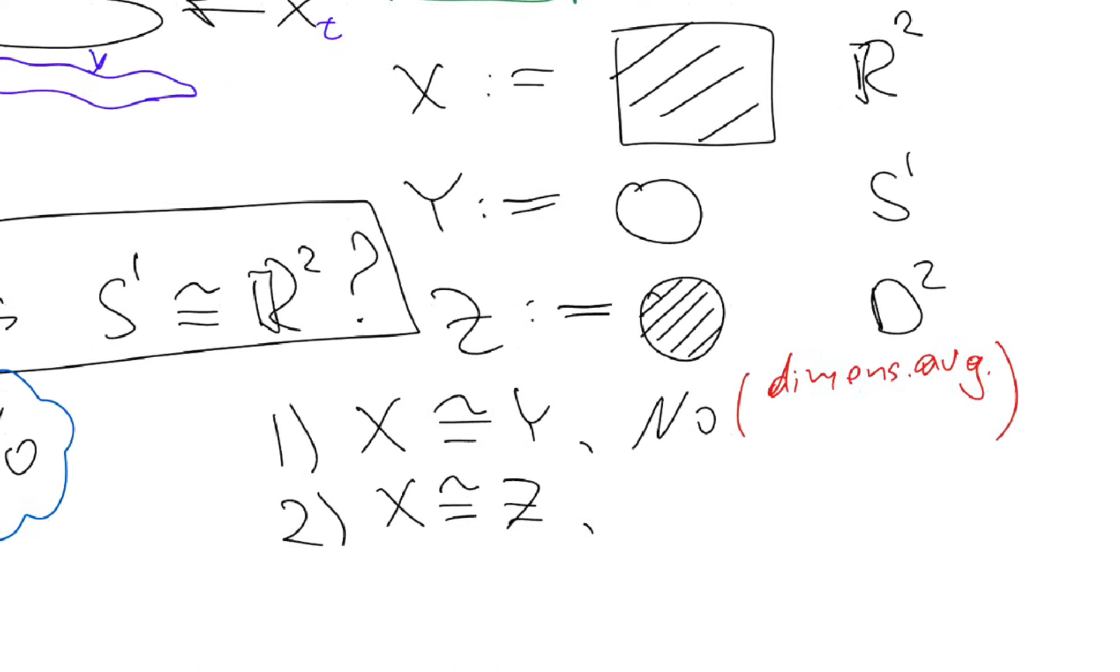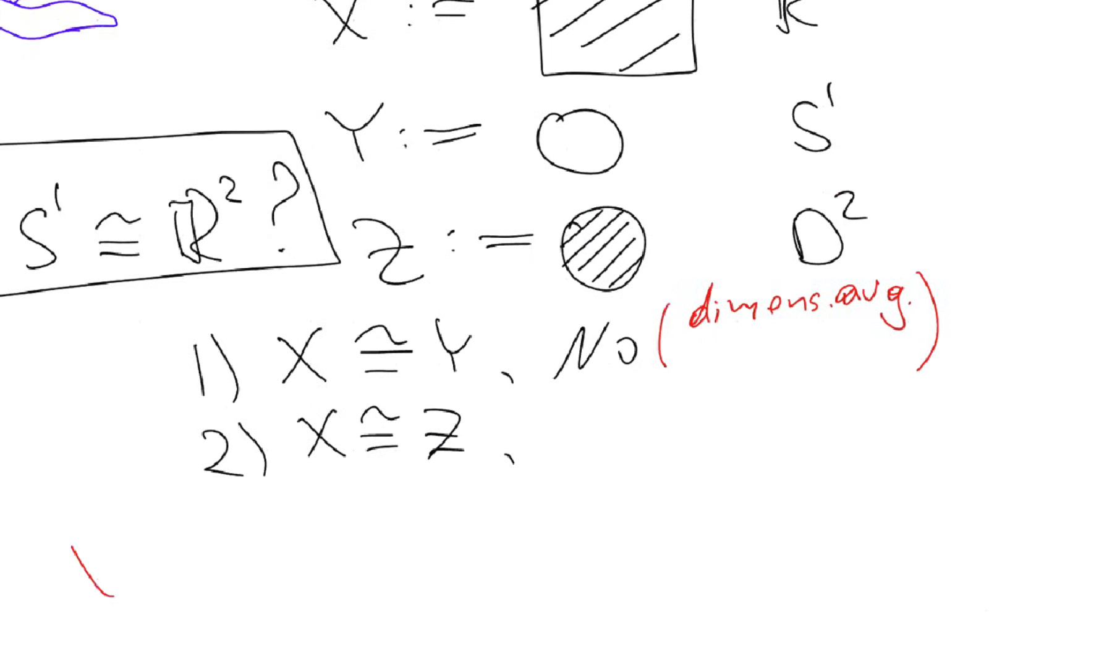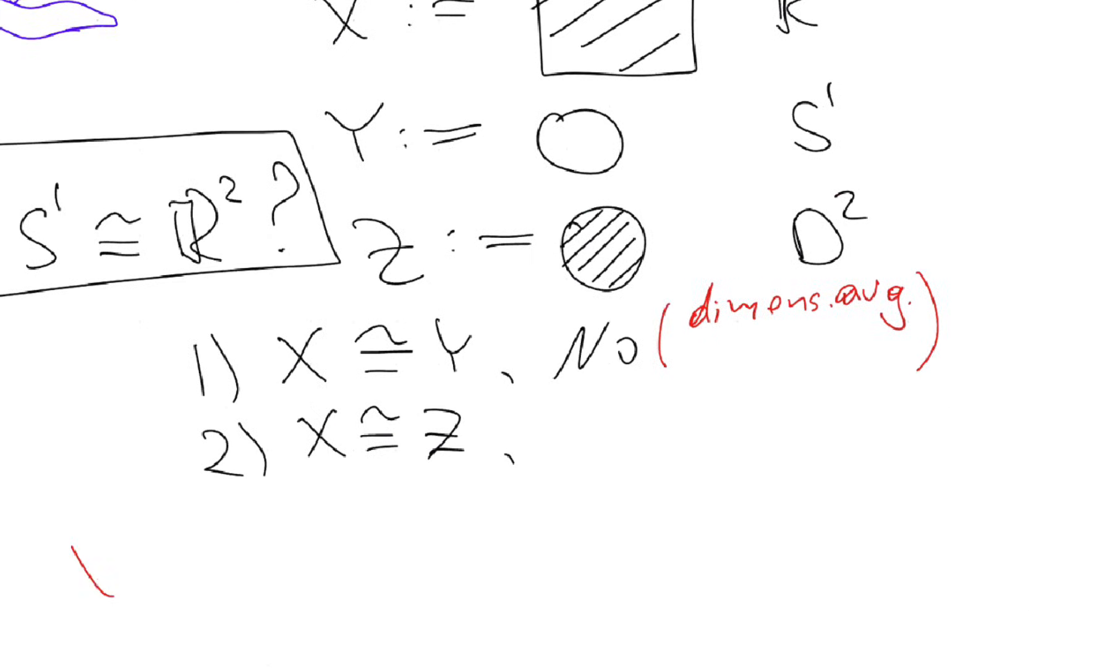So right now, your dimension argument doesn't work. Because in this case, what do we have? We have a disk and the plane. So a disk has dimension two. Then I will repeat my question: is X homeomorphic to Z? So let's think, let's try to see and look at some topological properties and some arguments. If you have a topological space X, what properties do we like about this topological space? What can we study about it?